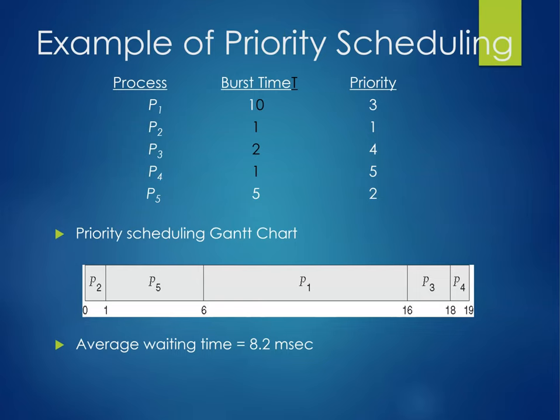In priority scheduling, we've got P2, P5, P1, P3, and P4. Lower priority processes like P2 could end up waiting forever, but as we go through, we will increase the priority so that way they don't get stuck forever.